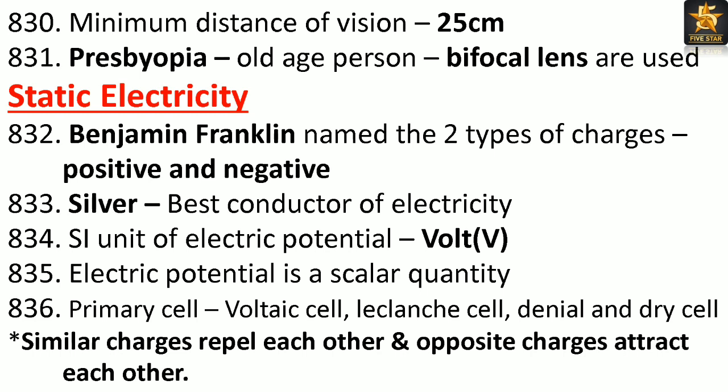Benjamin Franklin named the two types of charges: positive and negative. Best conductor of electricity: silver. Similar charges repel each other and opposite charges attract each other. Types of primary cells: Voltaic cell, Leclanche cell, Daniel cell, and Dry cell.